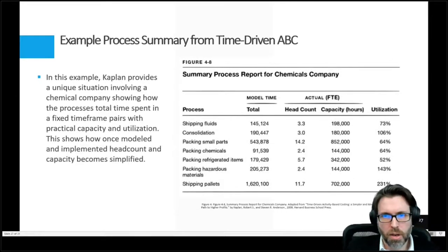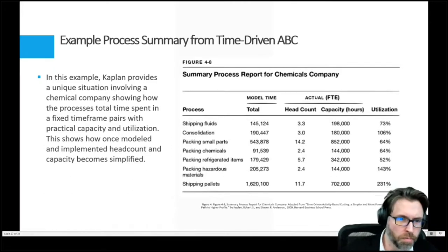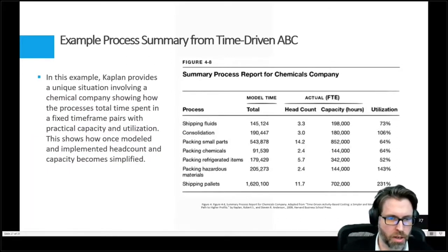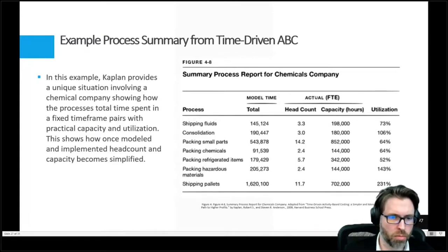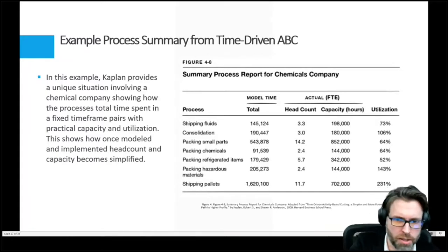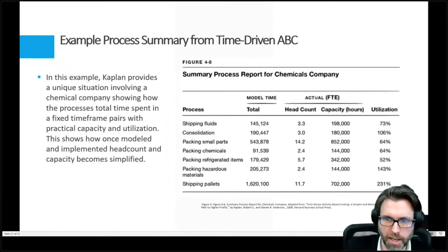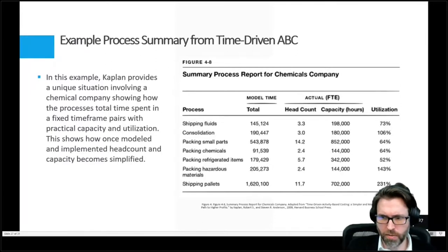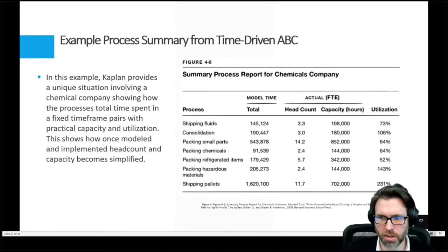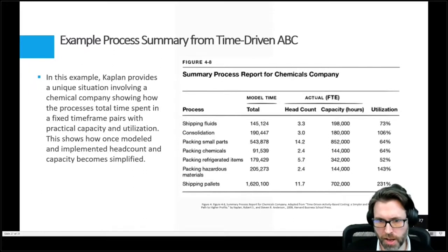Here's an example process summary from a time-driven activity-based cost model. It's a great example of taking some processes with time spent in a fixed timeframe, pairing it with capacity and utilization, to see how the model is effective. You look at processes like shipping fluid, consolidation, packing, small parts, chemicals — all these different things. You model the time, headcount, total practical capacity, and then look at your utilization. This view lets you ask: where are we under capacity? Where are we over capacity? Where can we shift things around? Where do we need to hire, and where do we have resources we can move around?